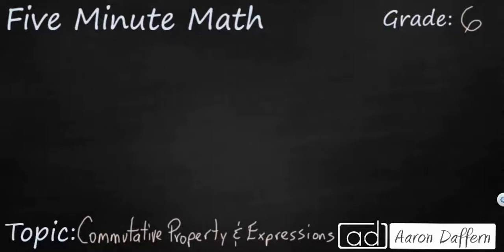Hello and welcome to 5-Minute Math. Today we are looking at the 6th grade concept of expressions and how we can simplify expressions or make equivalent expressions with a commutative property, and we'll do it in 5 minutes or less. Now the commutative property is sometimes known as the order property.